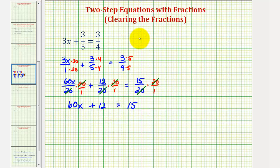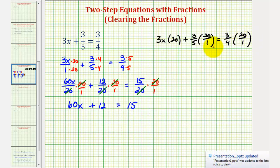Let's show that. If we recognize the LCD was 20, we could jump to the step where we had 3x times 20 plus 3/5 times 20, which we can write as 20 over 1, equals 3/4 times 20 or 20 over 1. This would be equivalent to what we did over here on the left.